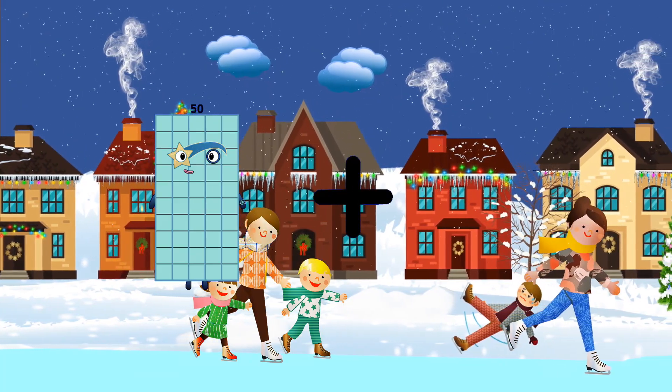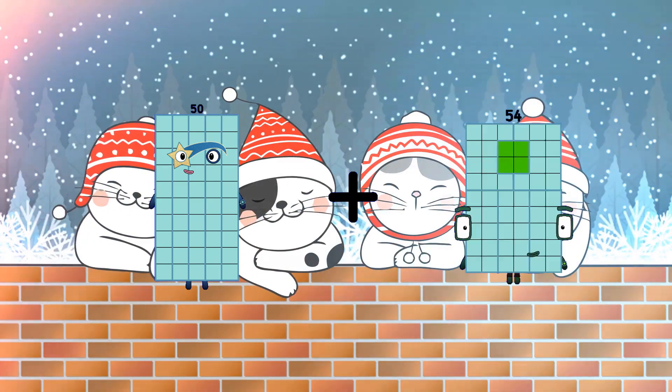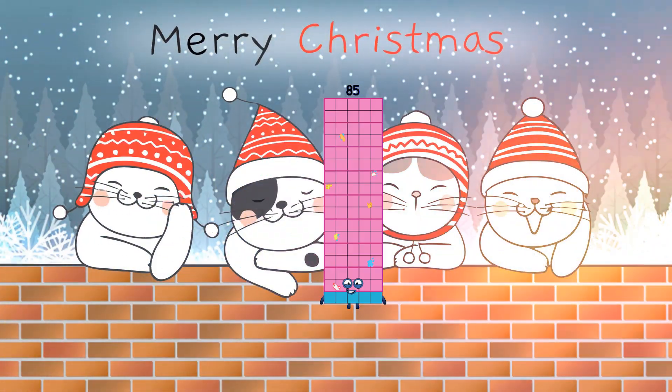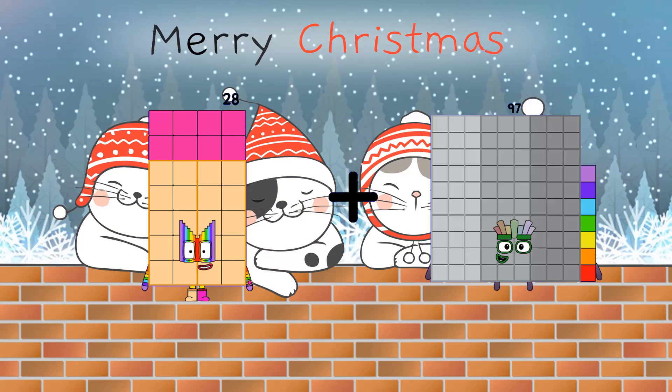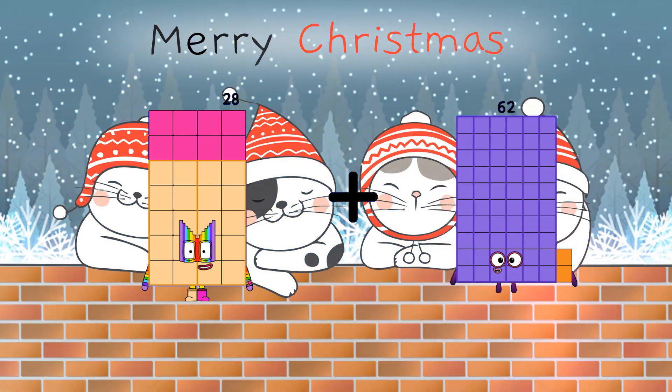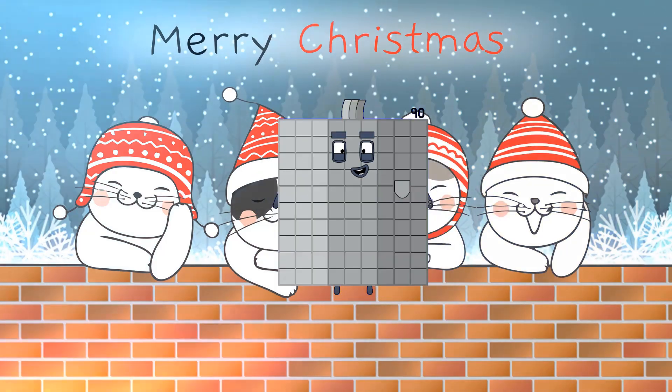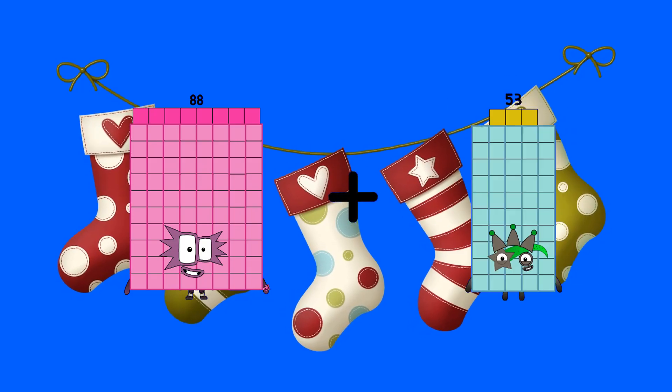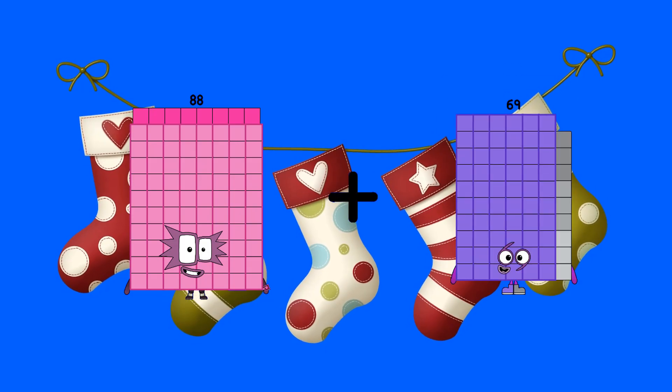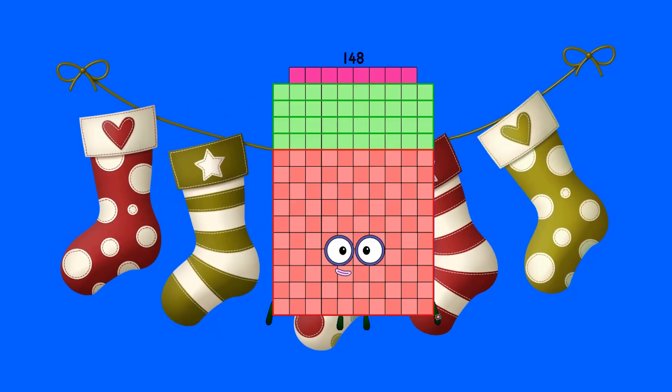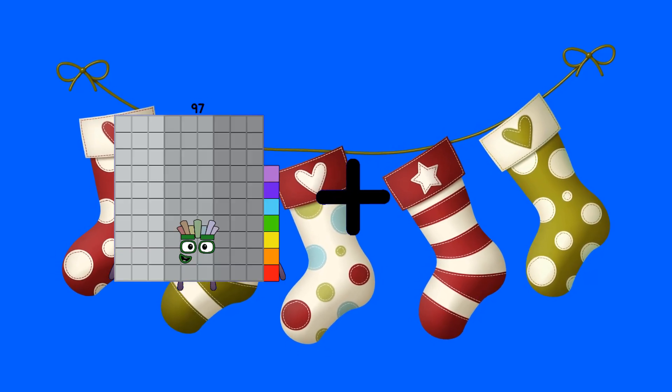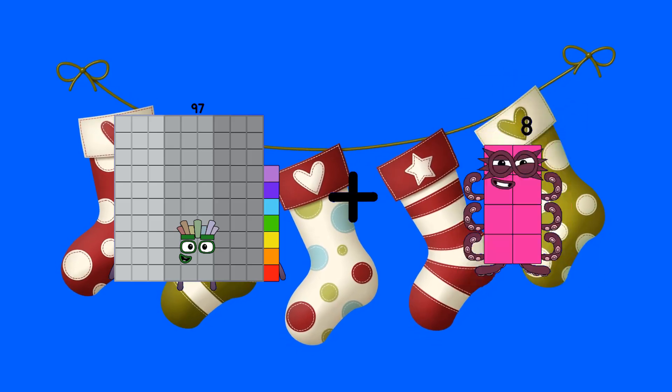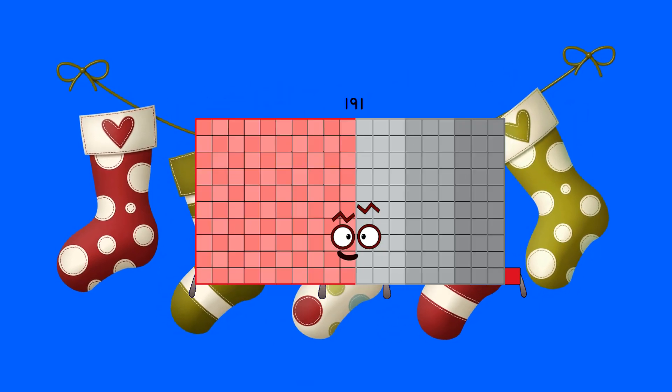50 plus 35 equals 85. 28 plus 62 equals 90. 88 plus 60 equals 148. 97 plus 94 equals 191.